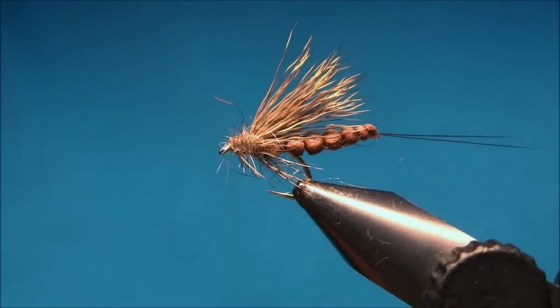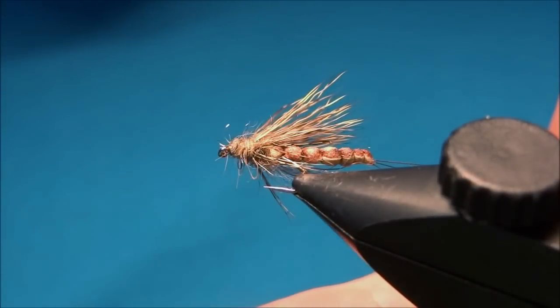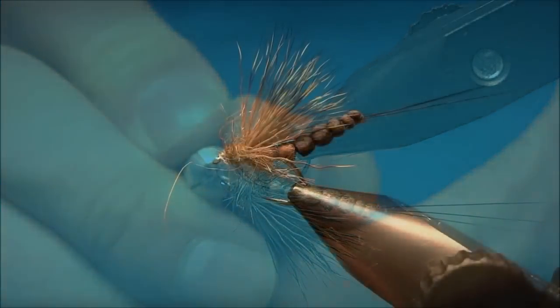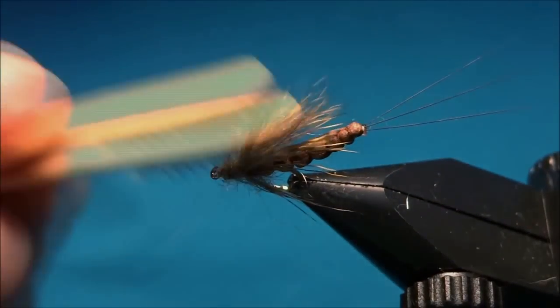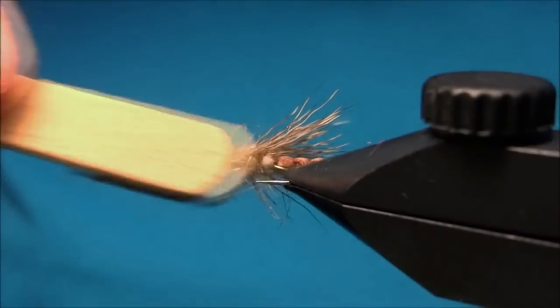Some glue onto the dubbing needle and then onto the thread wraps. And then we'll just brush out the dubbing and mix it with the legs.